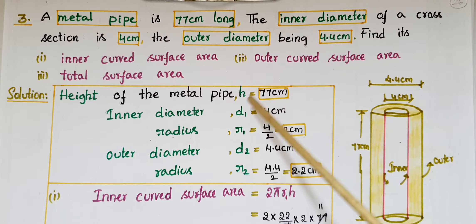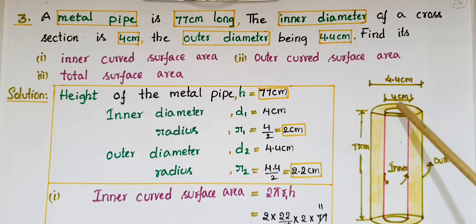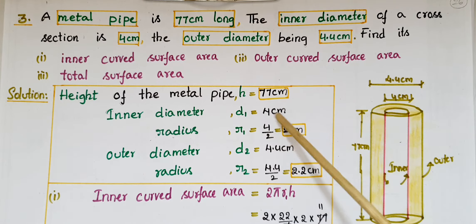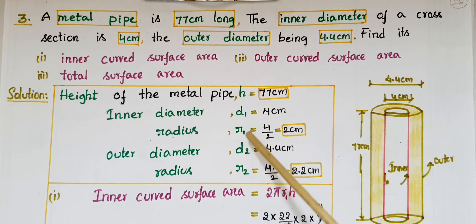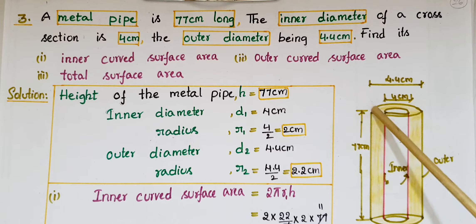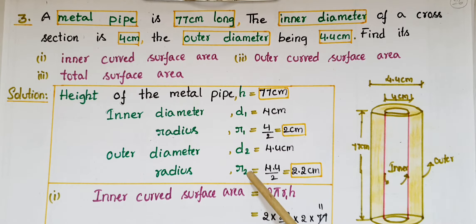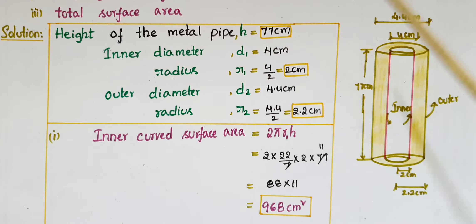The height of the metal pipe h is 77 centimeters. The inner diameter d1 is equal to 4 centimeters, and the inner radius r1 is equal to diameter divided by 2, so 4 by 2 equals 2 centimeters. The outer diameter d2 is 4.4 centimeters, and the outer radius r2 is equal to 4.4 by 2, that is 2.2 centimeters.